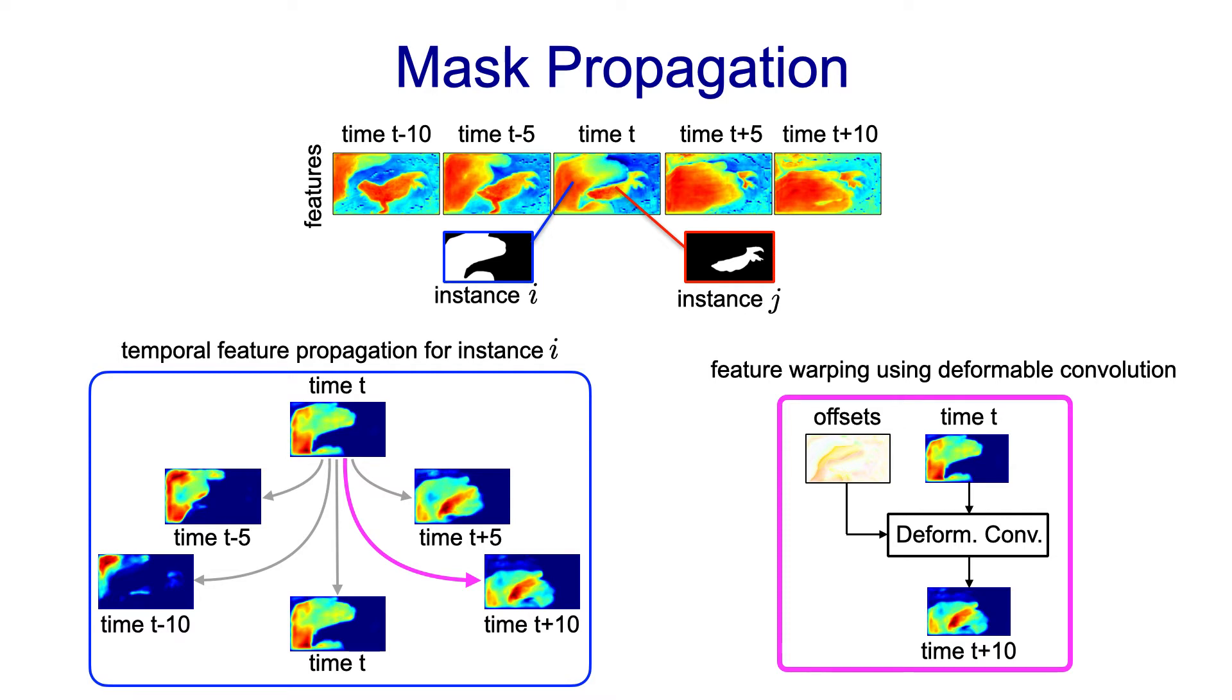The feature propagation mechanism is implemented using a deformable convolution which warps the provided feature tensor according to the sampling offsets predicted by our model.